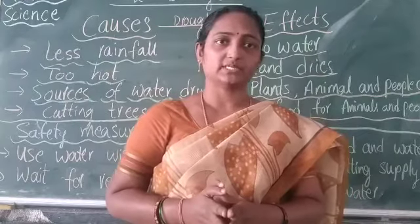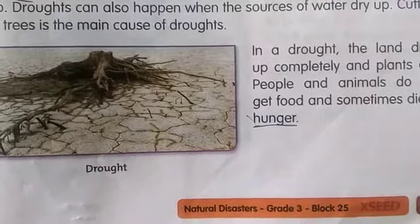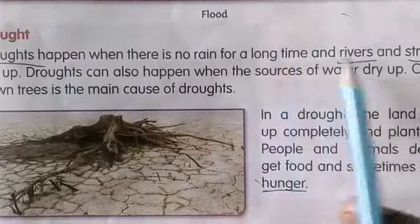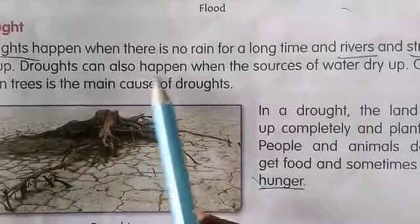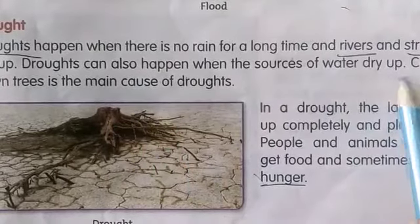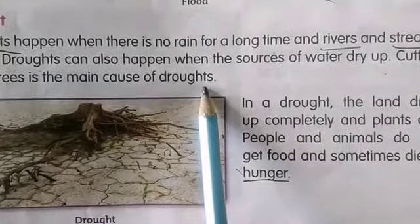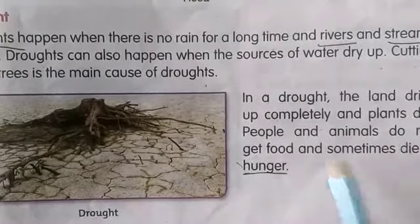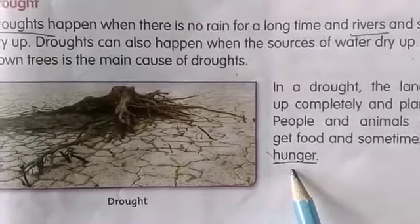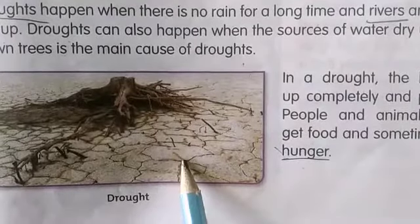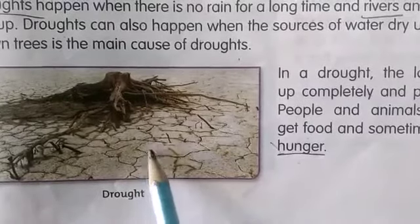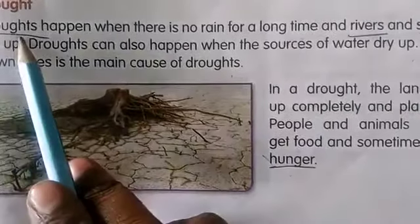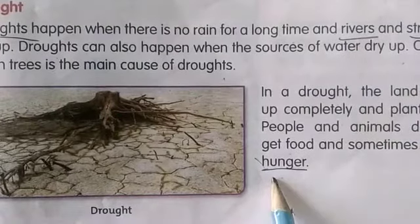Now let us learn from the reader. Children, open your reader to page number 155. Droughts happen when there is no rain for a long time and rivers and streams dry out. Droughts can also happen when sources of water dry out. Cutting down trees is the main cause of droughts. In a drought, the land dries up completely, plants die, and people and animals do not get food. Read the lesson and underline drought, rivers, streams, and hunger as keywords.